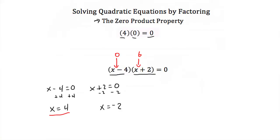If I take negative 2 and I plug that one in, this binomial will end up equaling negative 6, and this one will end up equaling zero. And if I multiply negative 6 times zero, I still get my zero.